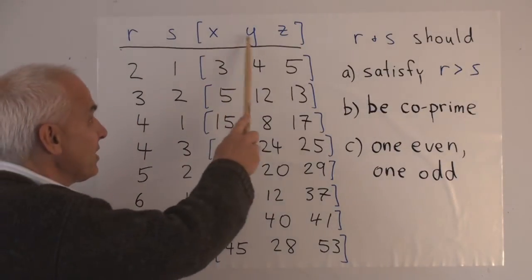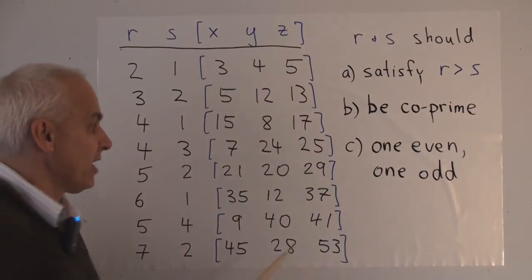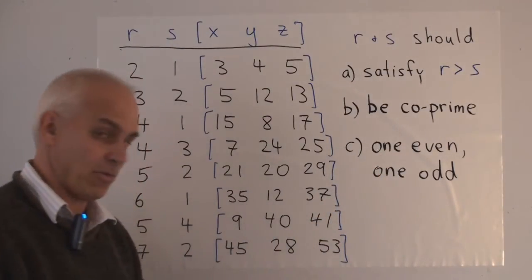So the only way to ensure that this thing is not three even numbers is to make one of r and s be even and the other one be odd.